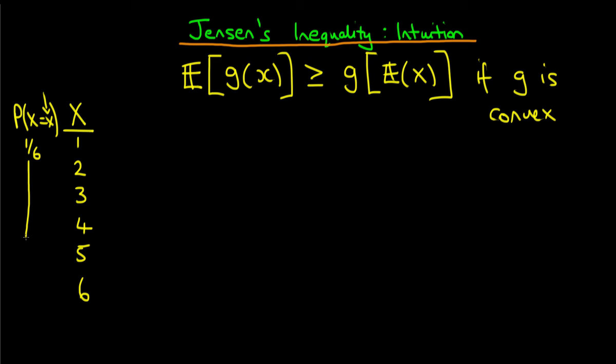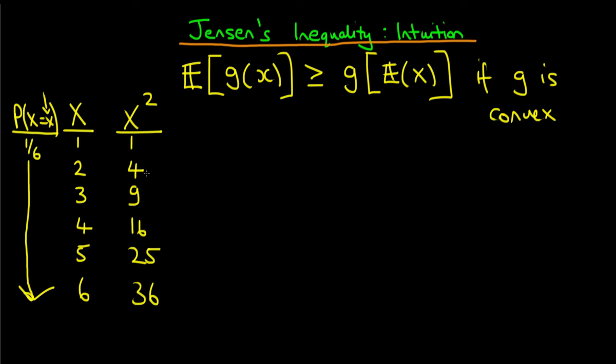We're assuming it's a fair die. Assume that the way this particular game works is that you are paid an amount equal to x squared — that's the value on the die, all squared. So in the first case it's just 1, the second case it's 4, then 9, 16, 25, or 36. In order to answer our question, we note that the function g here is represented by x going to x squared, because that's the transformation from our die value to the payoff.